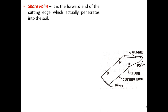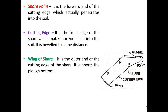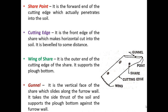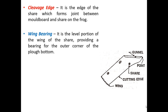Shear point is the forward end of the cutting edge which actually penetrates into the soil. Cutting edge is the front edge of the shear which makes a horizontal cut into the soil - it is beveled to some distance. Wing of shear is the outer end of the cutting edge of the shear; it supports the plow bottom. Gunnel is the vertical face of the shear which slides along the furrow wall - it takes the side thrust of the soil and supports the plow bottom against the furrow wall. Cleavage edge is the edge of the shear which forms the joint between moldboard and shear on the frog. Wing bearing is the level portion of the wing of the shear providing a bearing for the outer corner of the plow bottom.